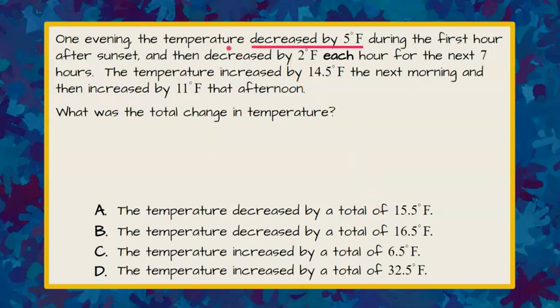The first thing that happens is in the evening the temperature decreased by 5 degrees Fahrenheit. We're going to represent that with a negative 5. So it went down, negative 5, it dropped 5 degrees.